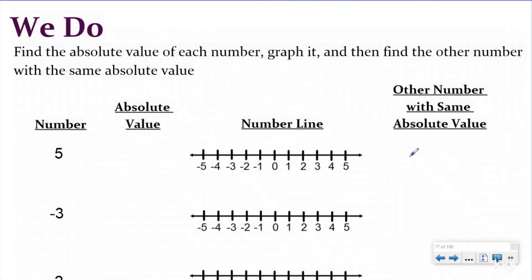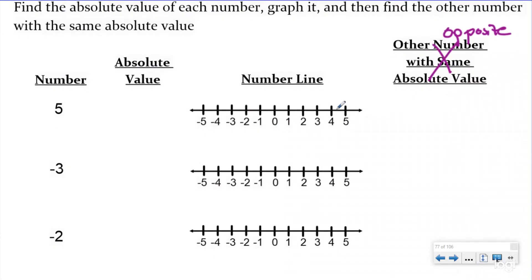There's no 'I do' problem for this because I want you taking notes with me, which can be found via a link to guided notes in the description — you can print them off or write online. Our 'we do' problem says: find the absolute value of each number, graph it, and then find the other number with the same absolute value — in other words, the opposite. My first number is five, so I'm graphing it at positive five. The absolute value of five is just equal to five — written with two lines on either side. The opposite of five, or the other number with the same absolute value, would be negative five, because negative five is also five away from zero.